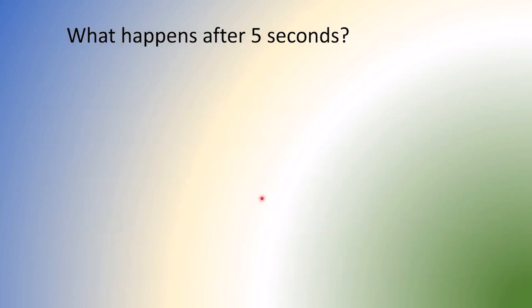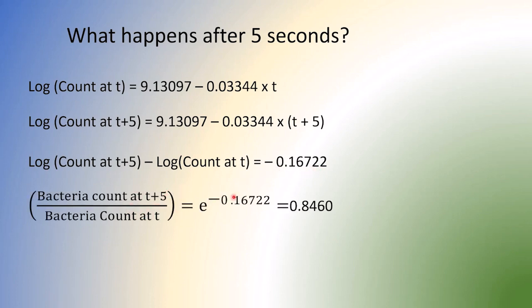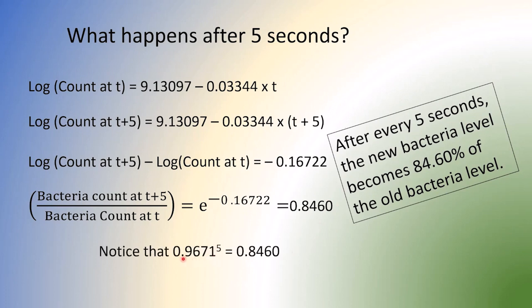What happens every 5 seconds? Well, same equation we do it. Same thing. At t, we have this much. At 5, we'll have this much. Take the difference and we get this difference. Once again, we do like this way. e to the power of that gives you 0.8460. So every 5 seconds, the bacteria becomes 84.60% of the previous count. Now, interesting thing is that this to the power of 5 equal to 2.8460. And what's this number?